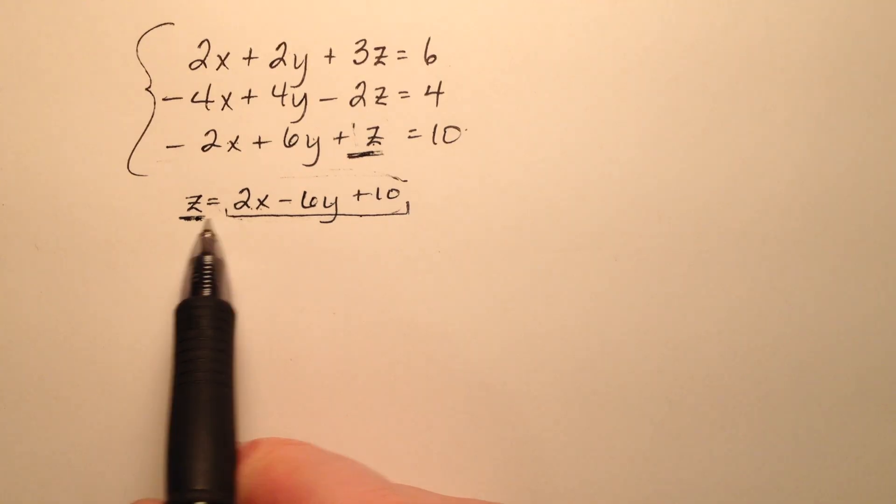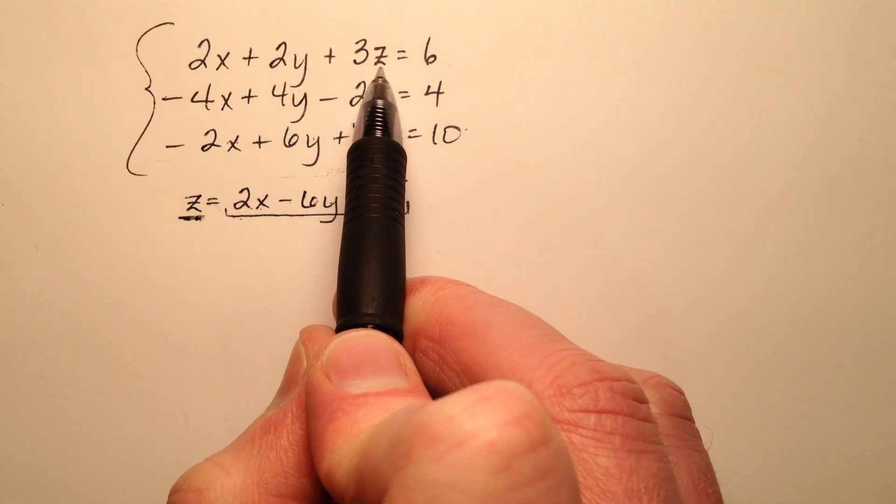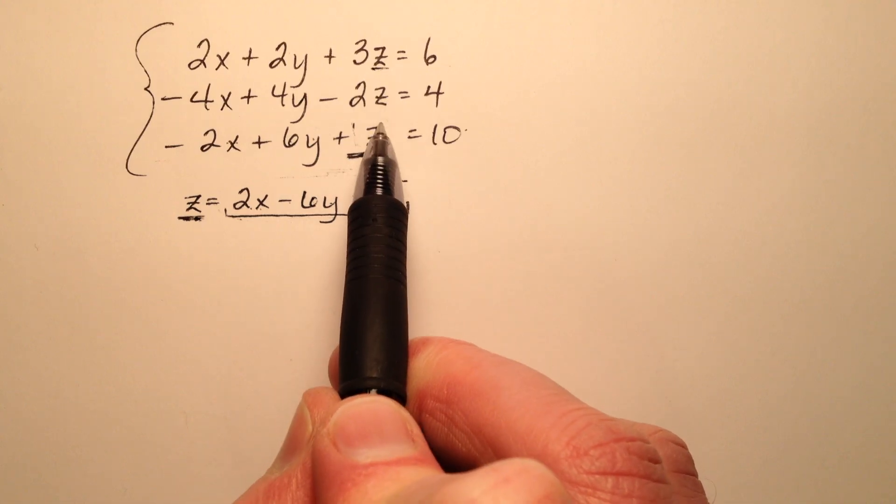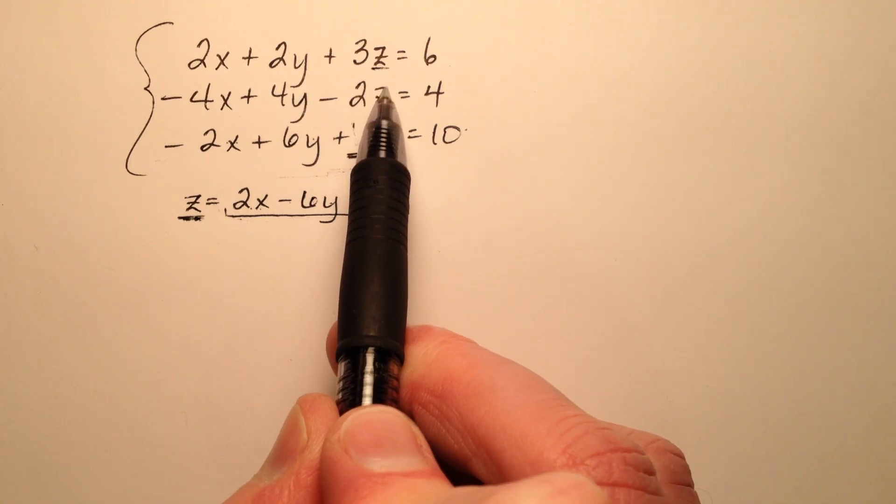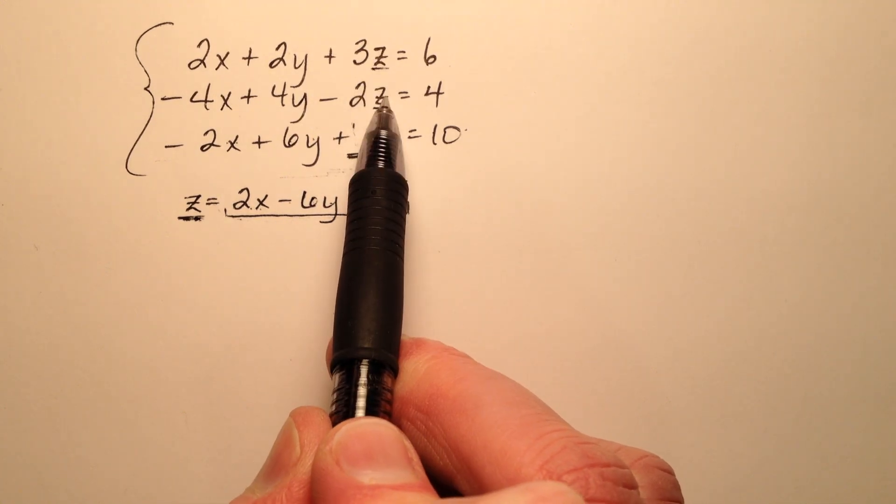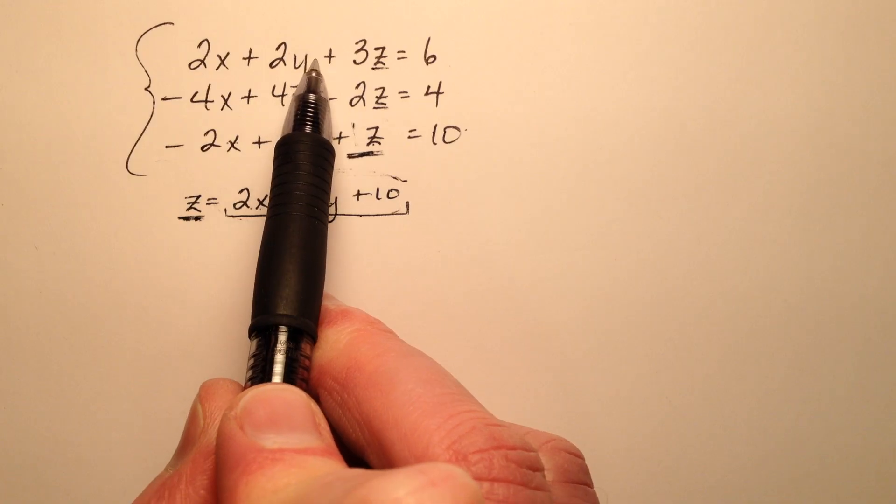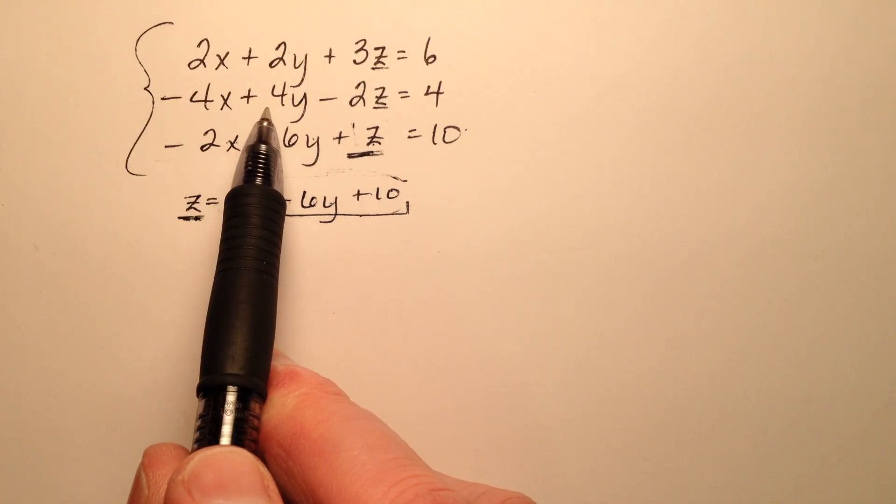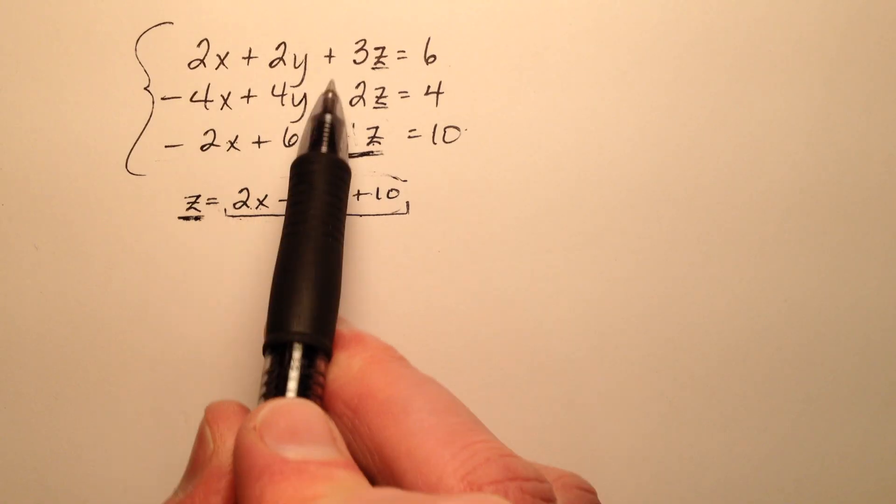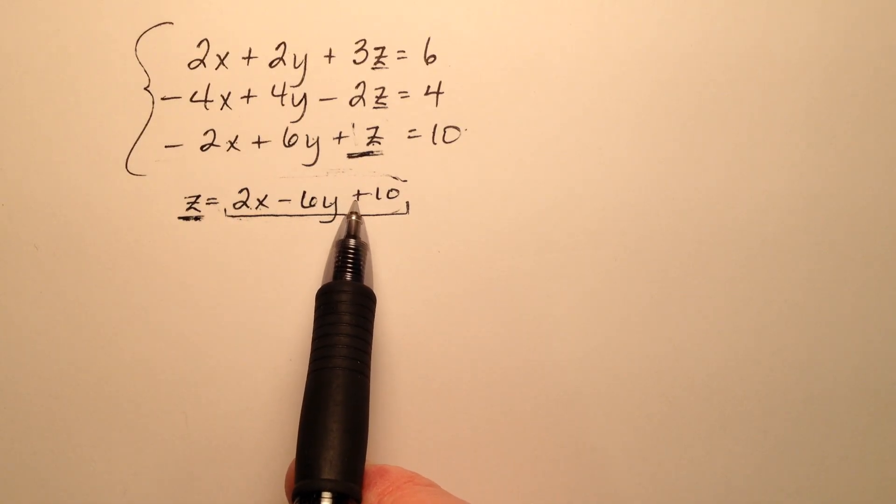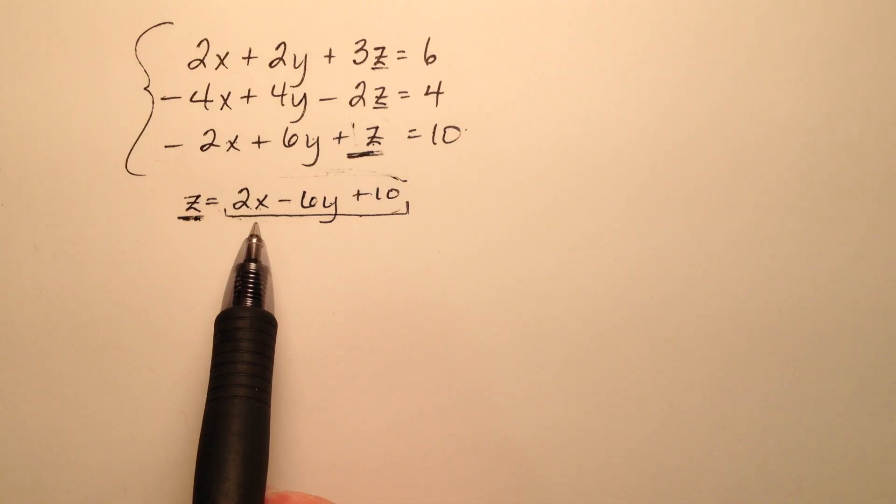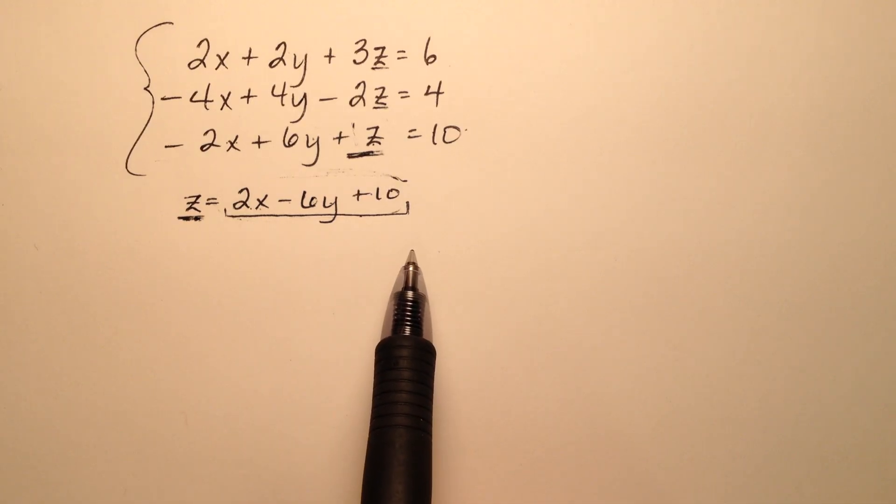Let's go ahead and do that. Let's take this expression and substitute it in for the z in the first equation and also the second equation. In doing so, I'm going to eliminate the z's from these top two equations, and I'm only going to have x's and y's, then I'll have a system with two equations and two unknowns. In that way, we whittle it down from a larger system to a smaller system until I start determining the actual values for the variables.